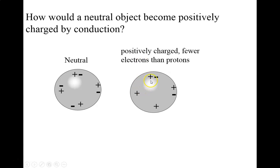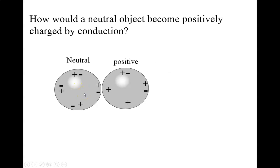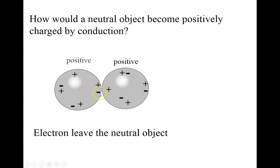Here we've got a positively charged object and here a neutrally charged object. What's going to happen when I touch these? With a positively charged object and a neutral object, they're both going to end up positively charged. The neutral one ends up positively charged because some of its electrons flow over to spread out that extra charge. Now we end up with two positively charged objects.